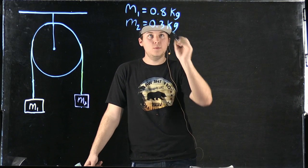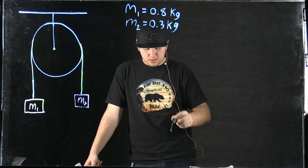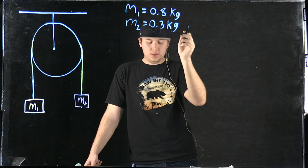It says two boxes with mass M1, which is 0.08 kilograms, and M2, 0.3 kilograms,